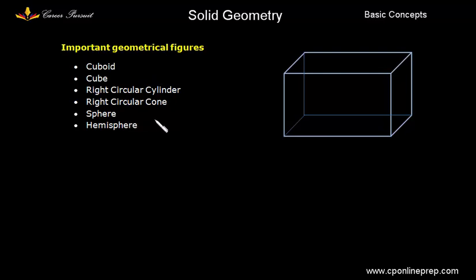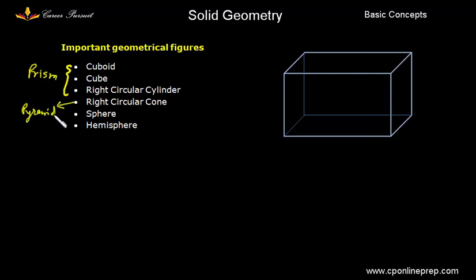In this video I will categorize these geometrical figures in three parts. The first three geometrical figures can be categorized under prism. Right circular cone falls under the category of pyramid. So if I can develop a general formula for volume, surface area and other dimensions for prism, that can be applicable for cube, cuboid and right circular cylinder. Similarly, the general formula for pyramid will be applicable for circular cone etc.